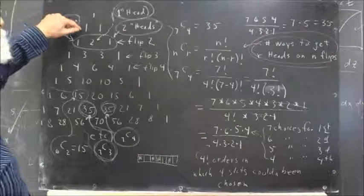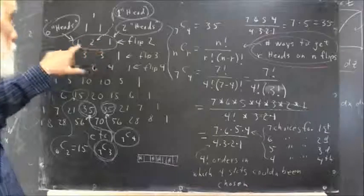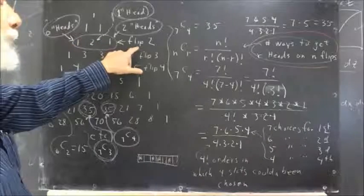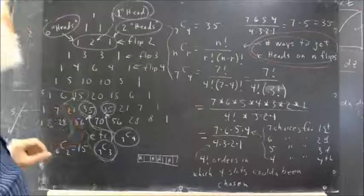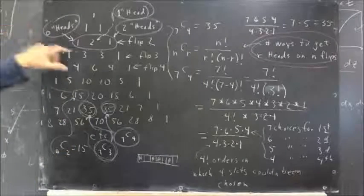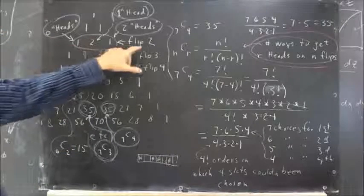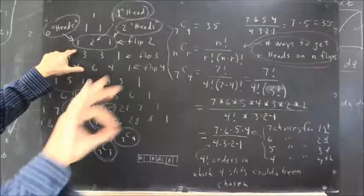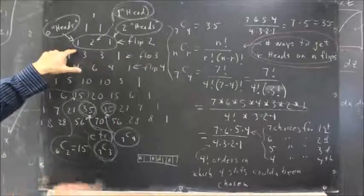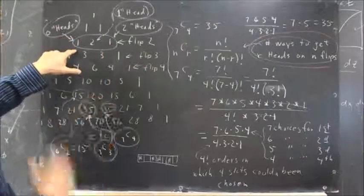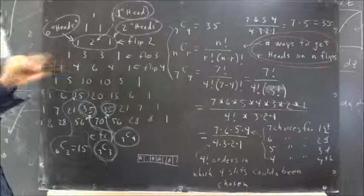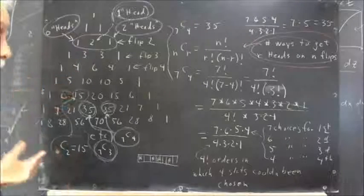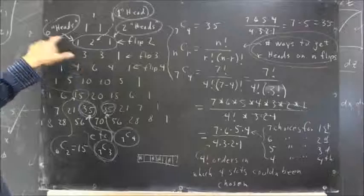Well, this row, let's take this row here. This row here corresponds to flipping 2 coins. Now, there's one way with flipping 2 coins to get 0 heads. 0, there it is. 0 heads. And that's to get tails and tails. So there's one way to get no heads.